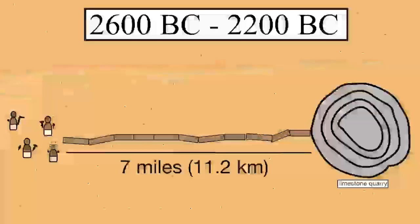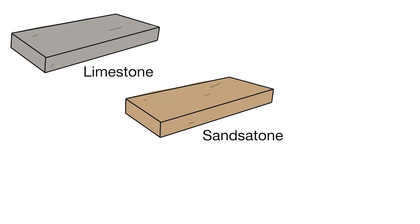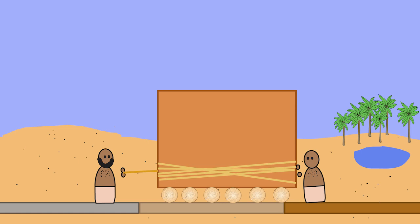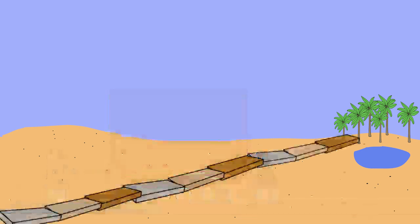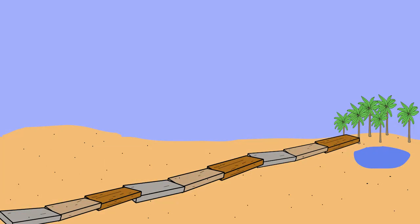The 7.5 mile stretch was made of slabs of limestone, sandstone, and wood. This flat surface reduced friction and allowed logs underneath the blocks to roll much easier to the building site. Slabbed roads were a great improvement from the uneven dirt roads or sand in the Middle East.